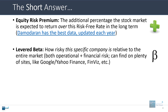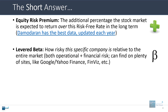Levered beta represents how risky this specific company that you're analyzing is relative to the entire stock market, and that includes both the operational and financial risk. You can find this number on plenty of sites — Google or Yahoo Finance, Finviz, KoiFin, for example. I tend to use Capital IQ, but there are many free sources for this as well.